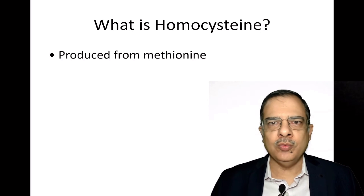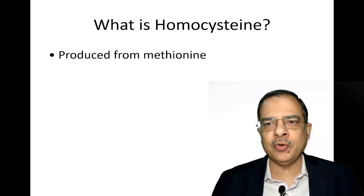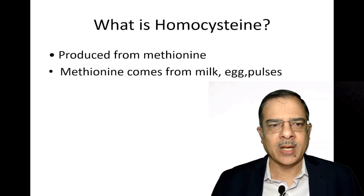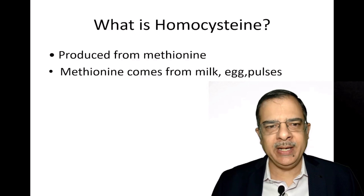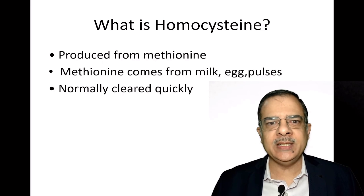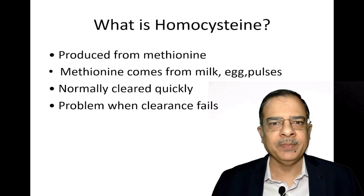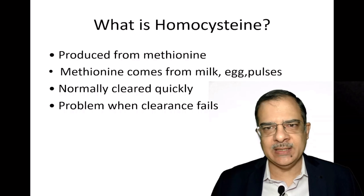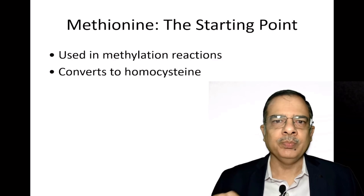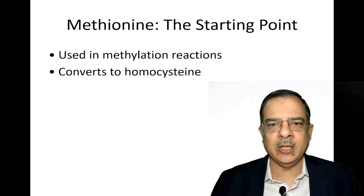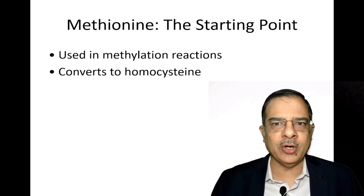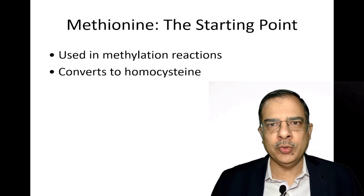So what exactly is homocysteine? Homocysteine is a molecule which is produced from the amino acid methionine, which is present in proteins found in milk, eggs, pulses, and meat. Normally this is metabolized very fast and cleared very quickly. The problem occurs when the clearance fails. Methionine is the starting point — it is used for methylation reactions in the body, like for DNA, and it converts into homocysteine.